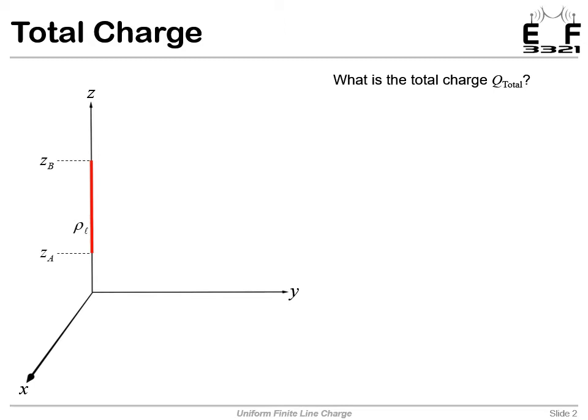So we have XYZ coordinates, and we're drawing this bar here. It's an infinitely thin bar, and it has a charge distribution rho L. We've oriented this along the Z-axis, and the bar starts at a position ZA, and it goes all the way up to a position ZB.